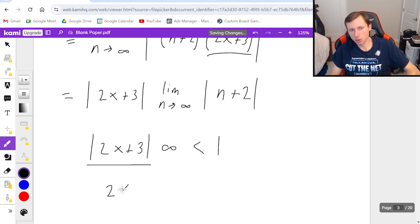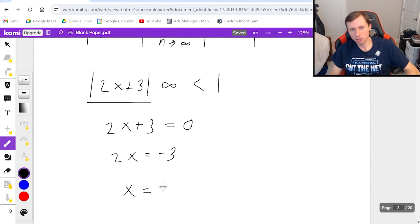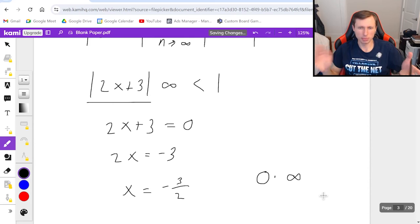So in other words I got to solve for zero here. That's my only chance of converging. So subtract three from both sides, divide by two. x equals negative three halves. This is the only point of convergence. And you may be thinking wait a minute this is zero times infinity. This is an indeterminate form. Don't I have to do something with L'Hopital's rule or something?